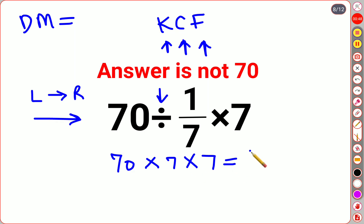So this becomes 490 multiplied by 7. Answer for this question is supposed to be 3430.